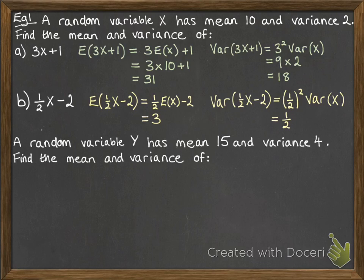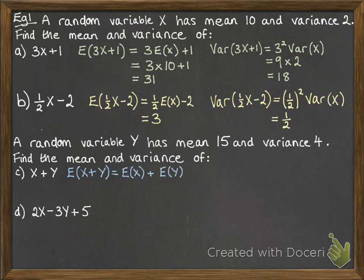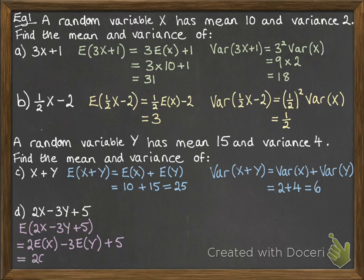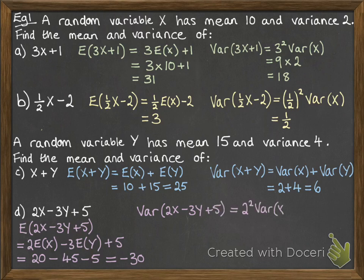A random variable y has mean 15 and variance 4. We want to find the mean and variance of x plus y, and of 2x minus 3y plus 5. For x plus y: the expectation is E(x) plus E(y), and the variance is Var(x) plus Var(y). For 2x minus 3y plus 5: the expectation is 2 times E(x) minus 3 times E(y) plus 5. The variance is 2 squared times Var(x) plus 3 squared times Var(y) — we add the variances even though we subtracted the distributions. The constant 5 does not affect the variance.